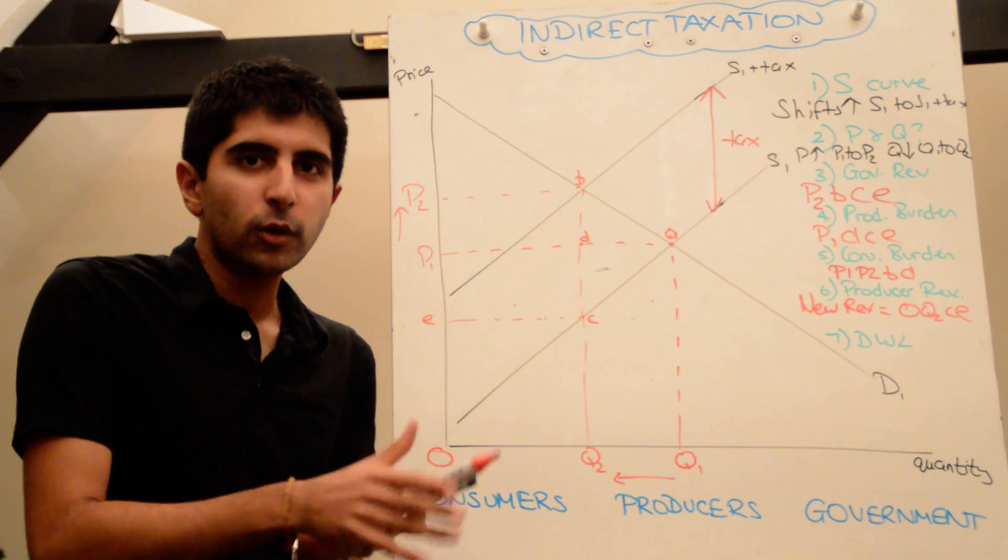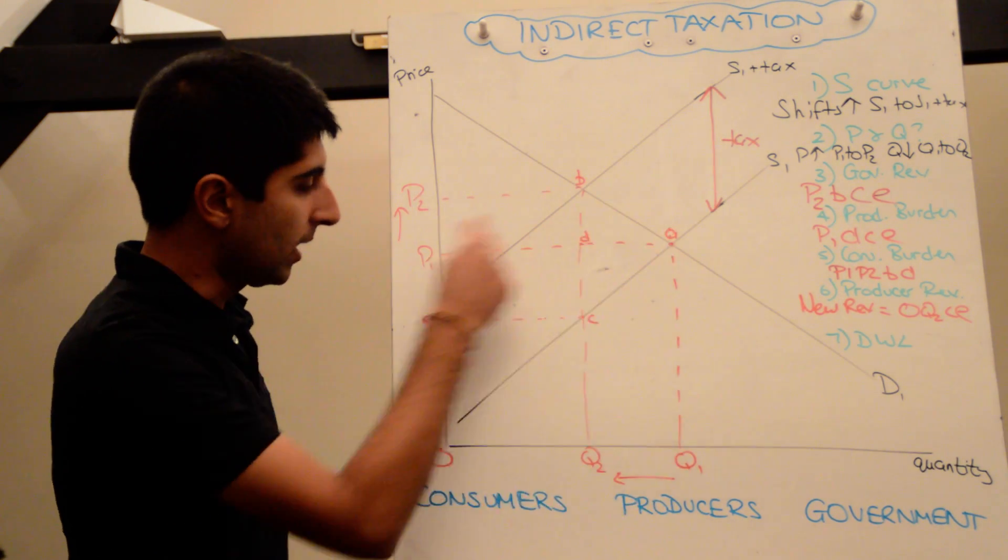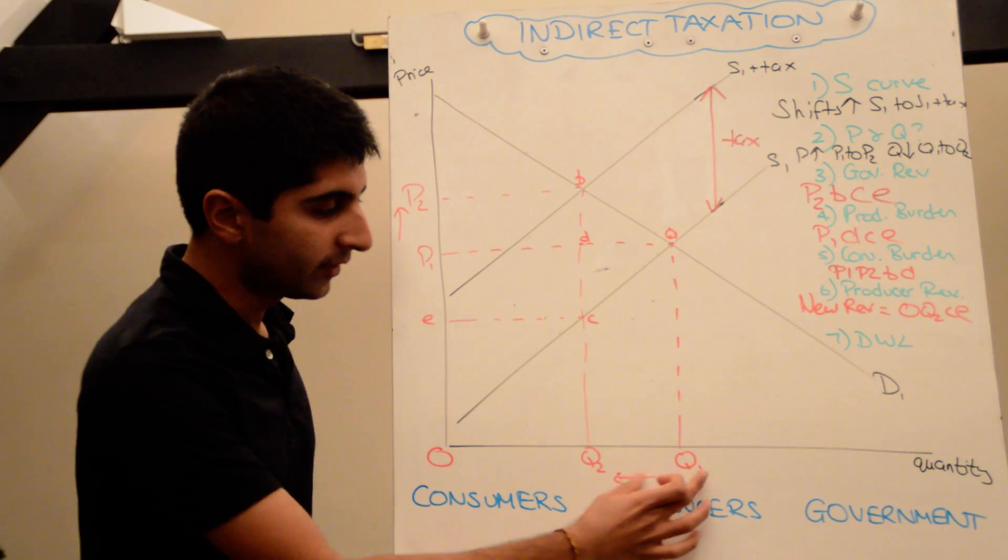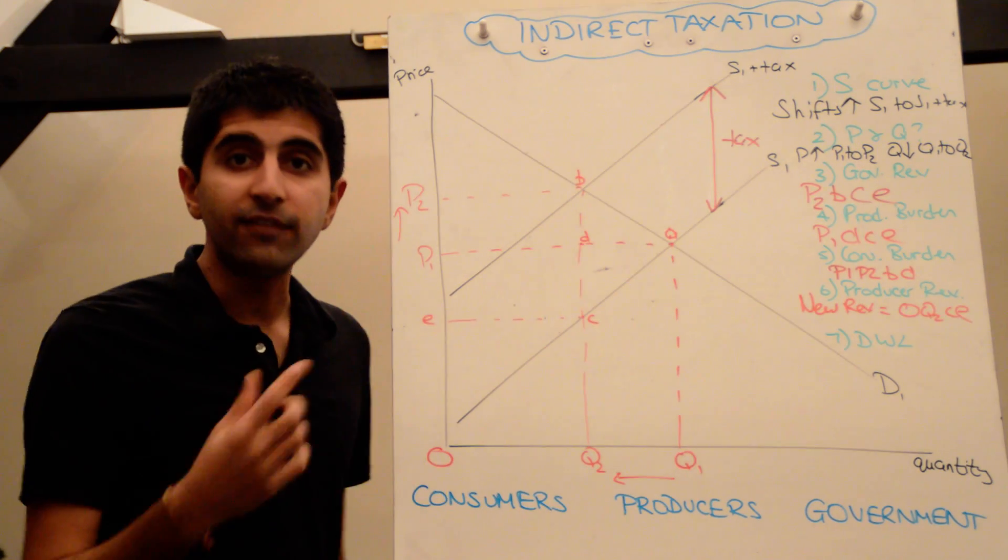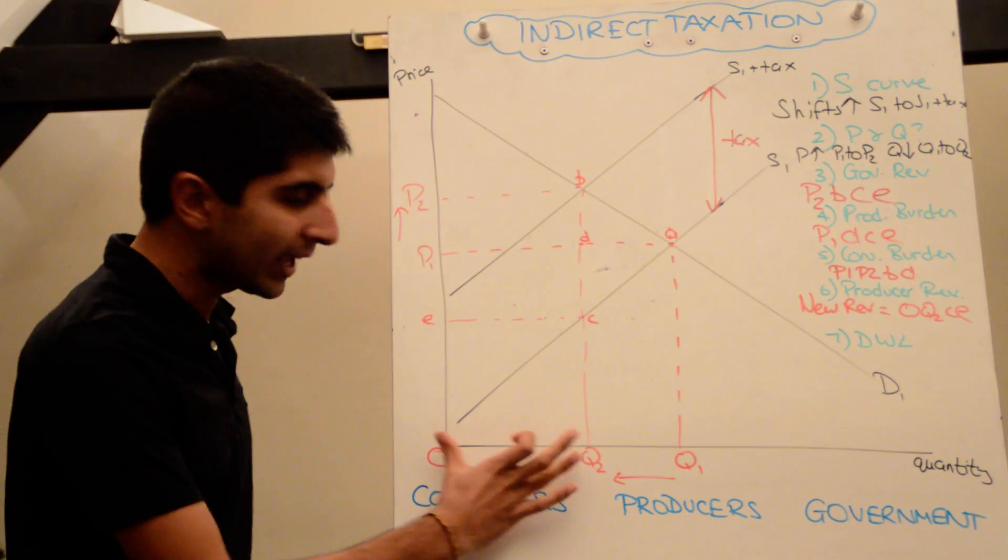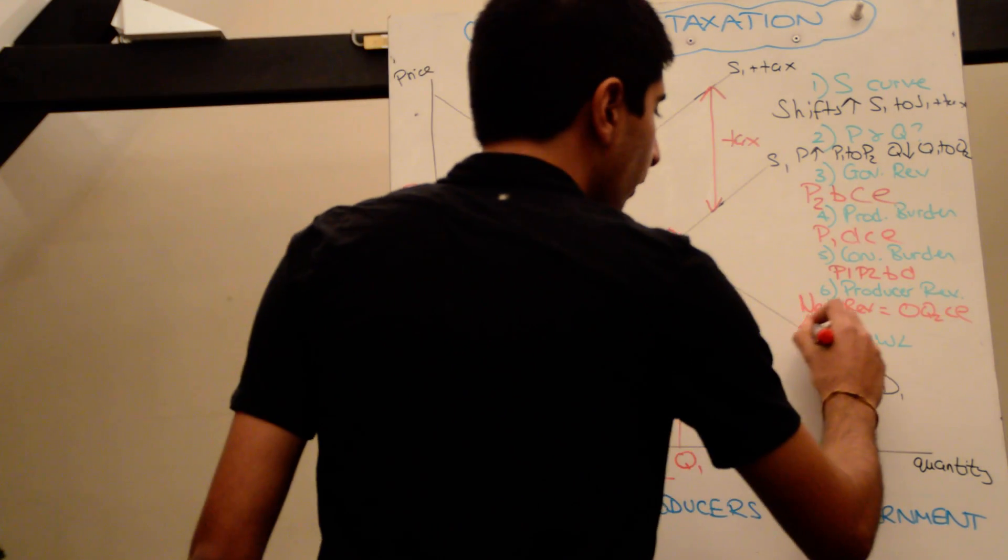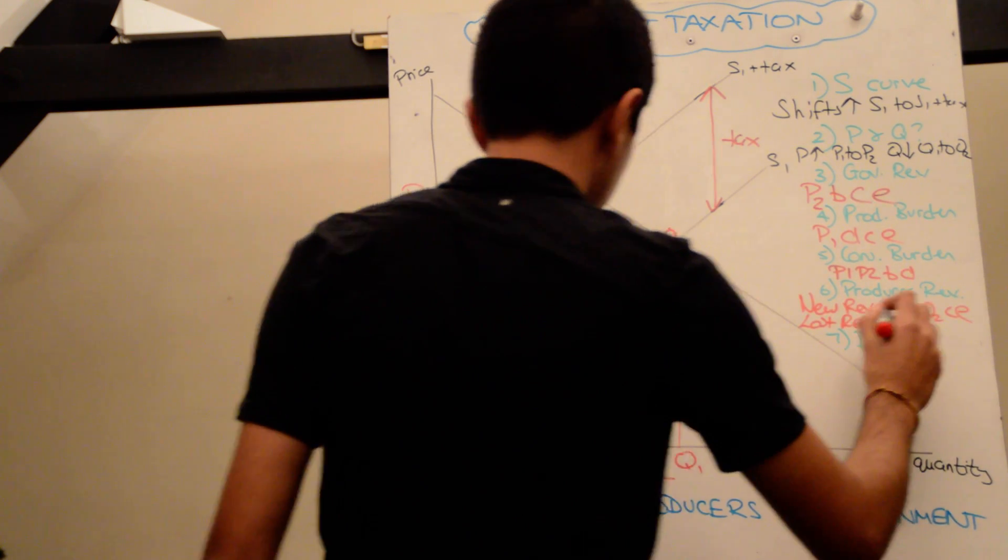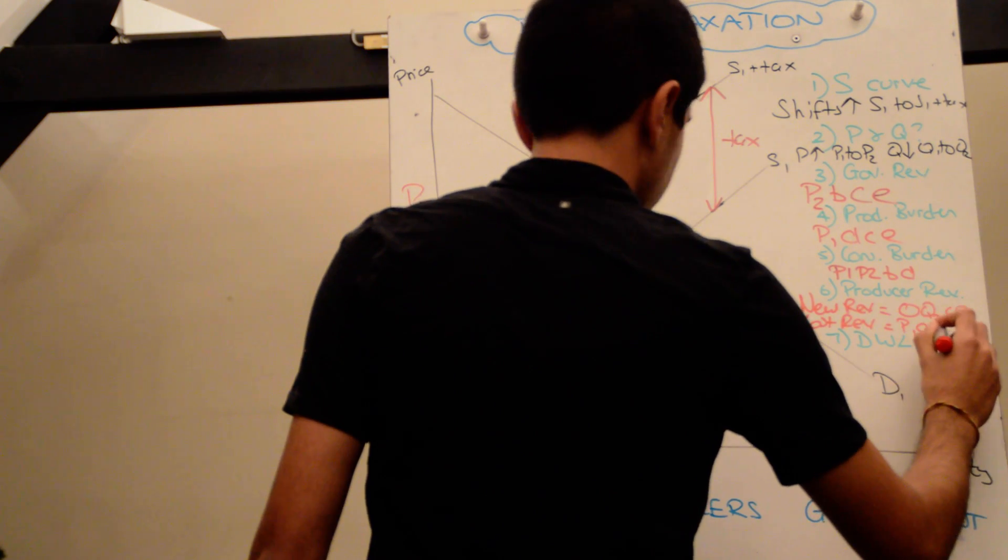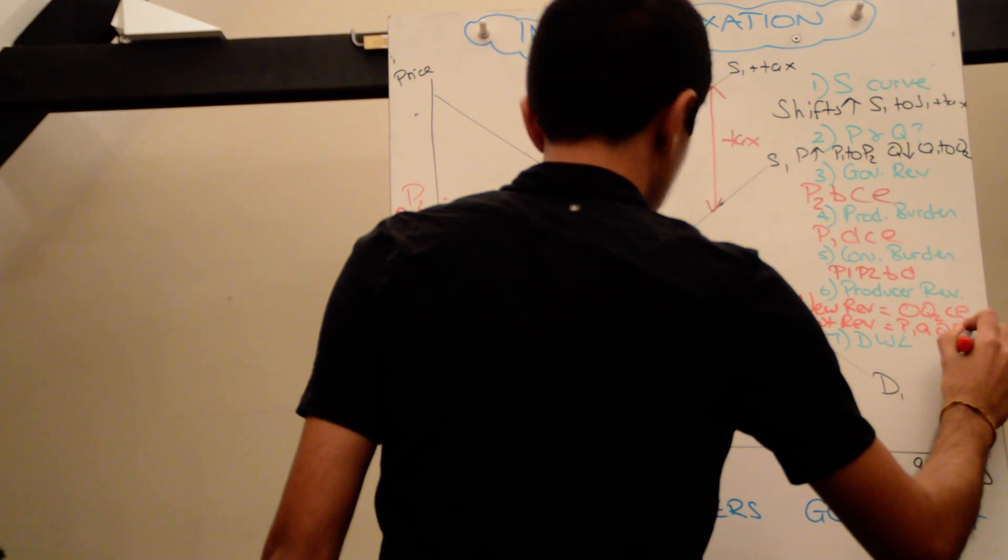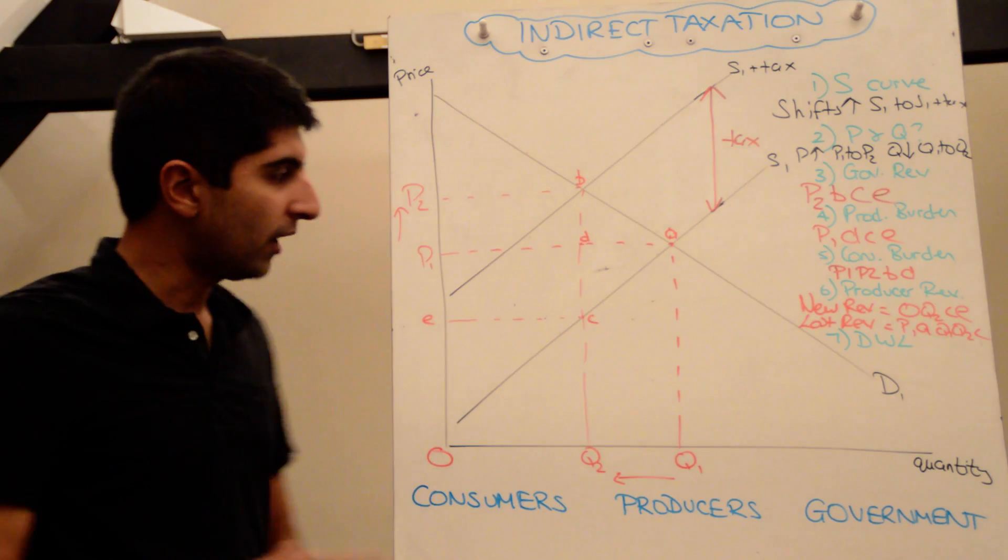If you compare it to what they were making before, producer revenue before the tax was actually the box Q1, A, P1, zero. They were selling Q1 units and they were getting a price of P1. That entire box gave you what producer revenue was before the tax. But now they're getting much less, a much smaller box. So lost revenue is equal to P1, A, Q1, Q2, and C.